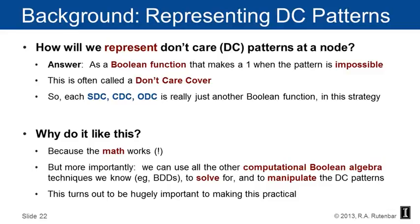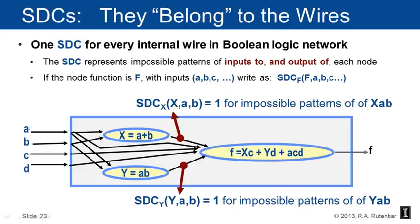I'm going to give you a computational recipe for every one of these kinds of don't cares — the SDCs, CDCs, and ODCs — and if you were really going to build something like this, you'd probably want to be using BDDs or another serious computational data structure. This turns out to be hugely important to making this stuff practical. The easiest way to think about satisfiability don't cares is that they belong to the wires. There's a satisfiability don't care for every internal wire in a Boolean logic network, and the SDC represents impossible patterns of the inputs to the node that makes this wire as its output.